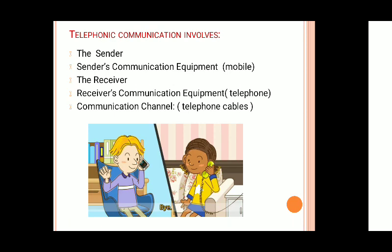Now let us take another slightly different example — two persons conversing on the phone. In telephonic communication, five components are involved: one is the sender, second is the equipment used by the sender (his telephone), third is the receiver, fourth is the receiver's communication equipment (another phone), and fifth is the communication channel, which here is the telephone cables. So there are five components involved in telephonic conversation.